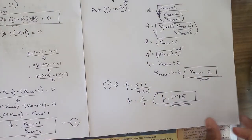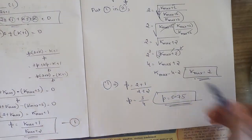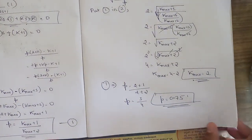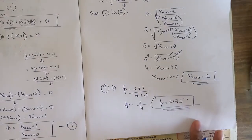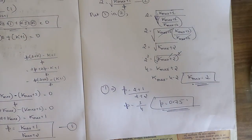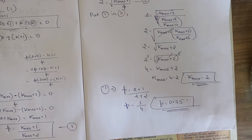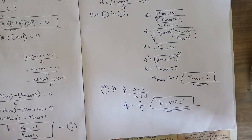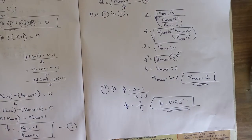So we have found k_margin = 2 and p = 0.75 for this problem. Hope you have understood these problems. Please like, share, and subscribe. You can also refer to our playlist for model paper solutions for all subjects.